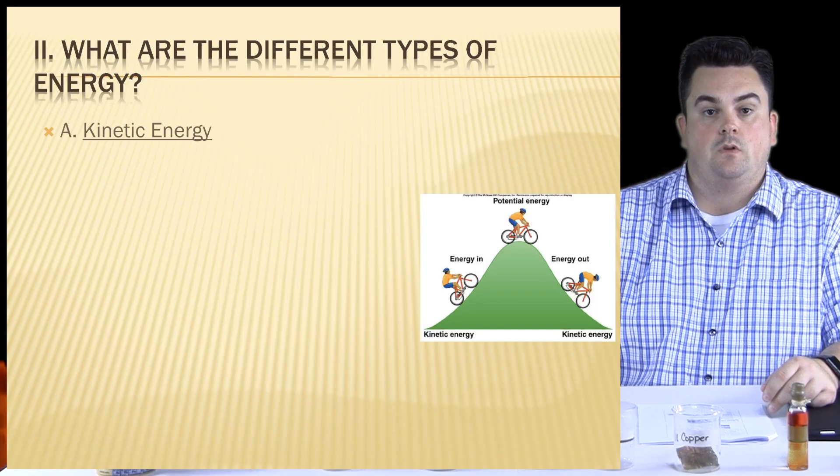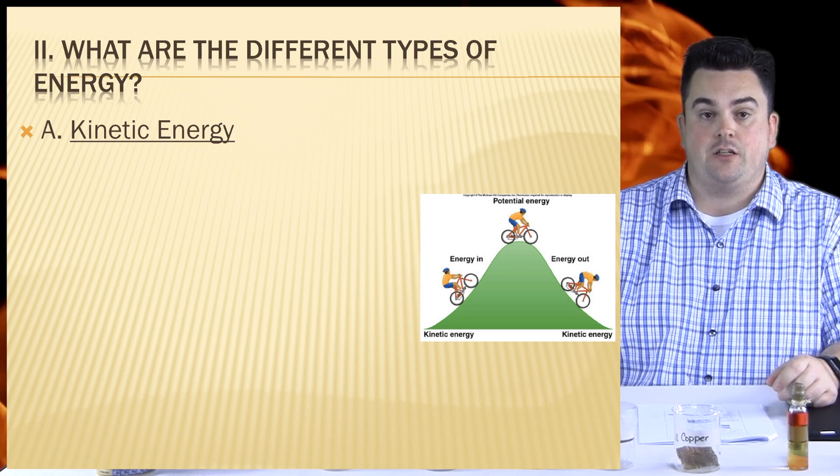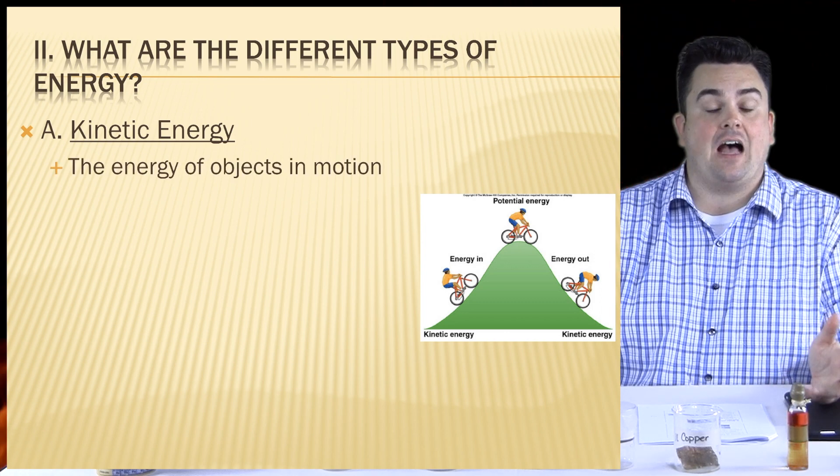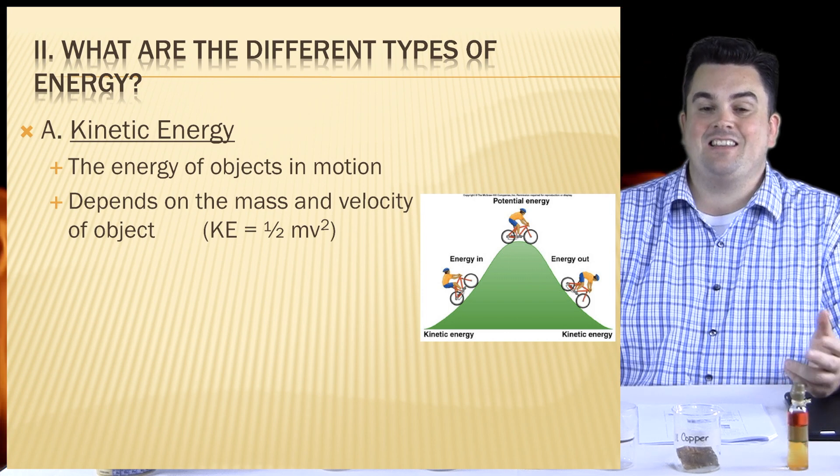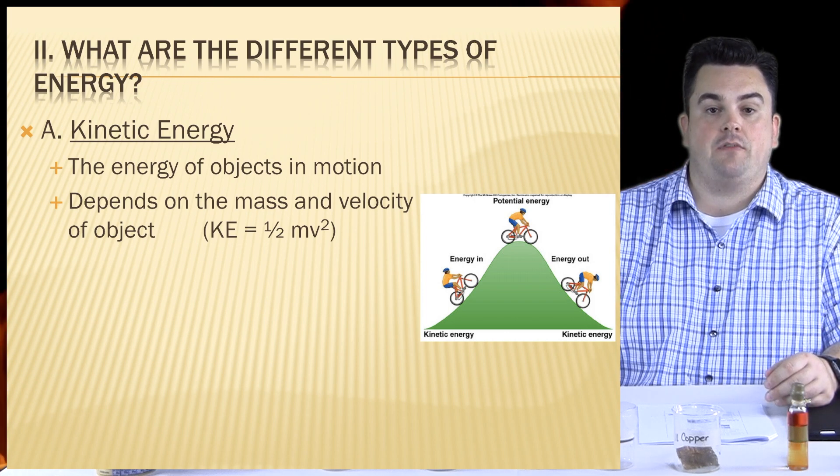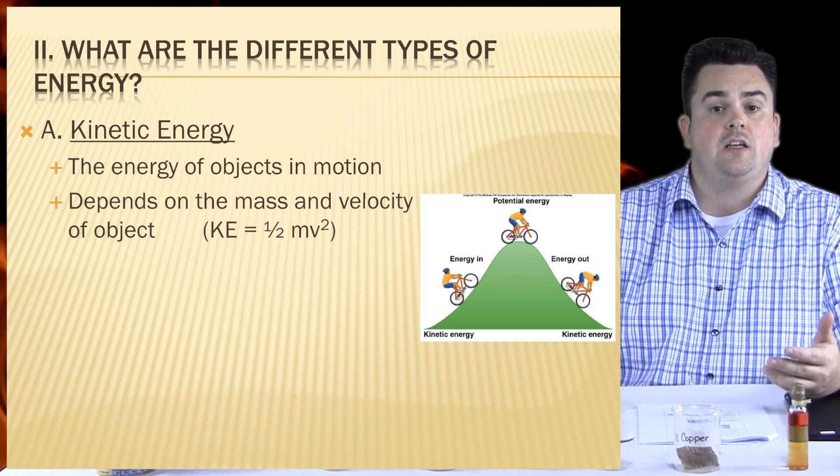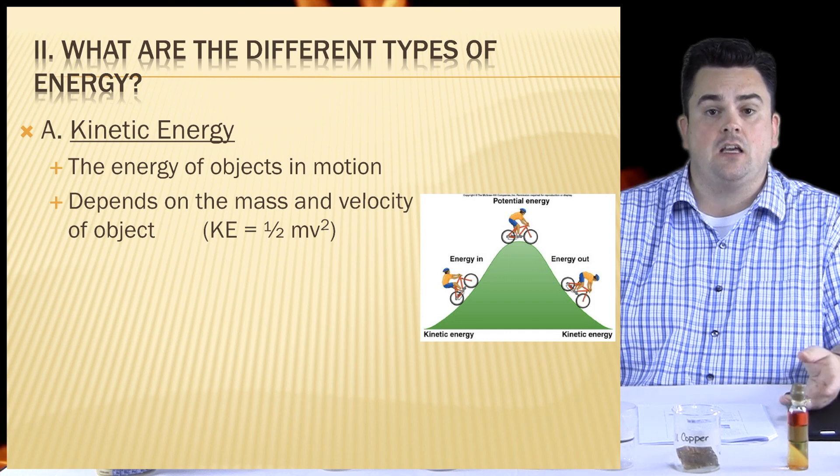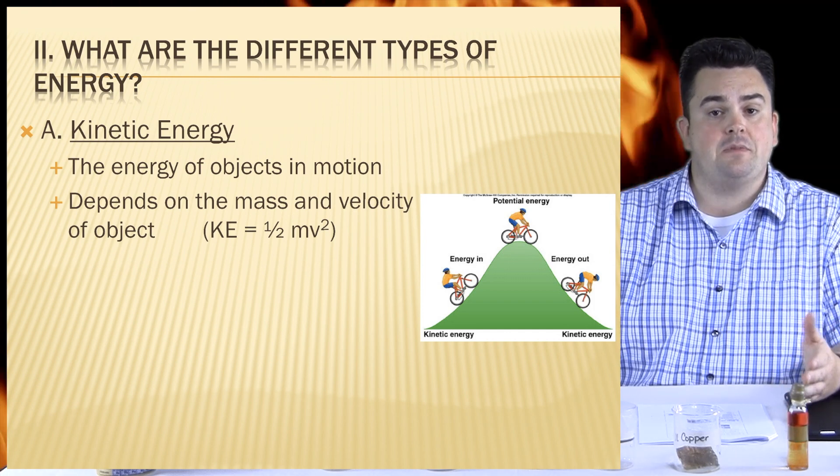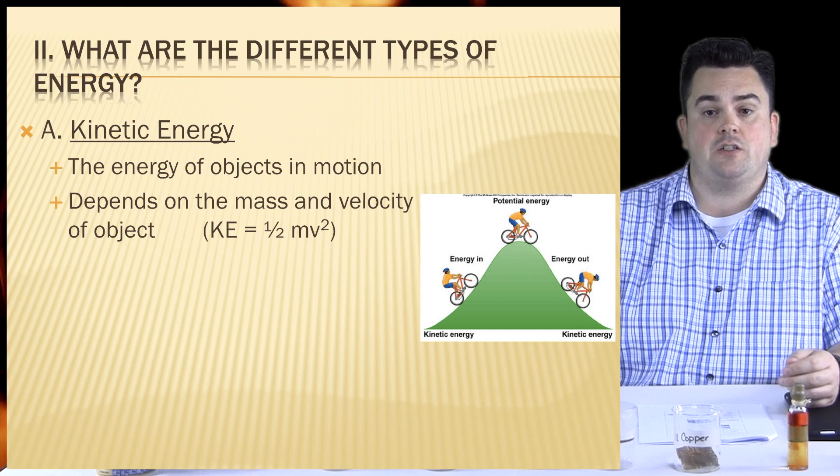What are the different types of energy? First, there's kinetic energy. This is the energy of objects in motion. It depends on the mass and velocity of the object. So our equation is kinetic energy, KE, equals one-half times the mass times velocity squared.